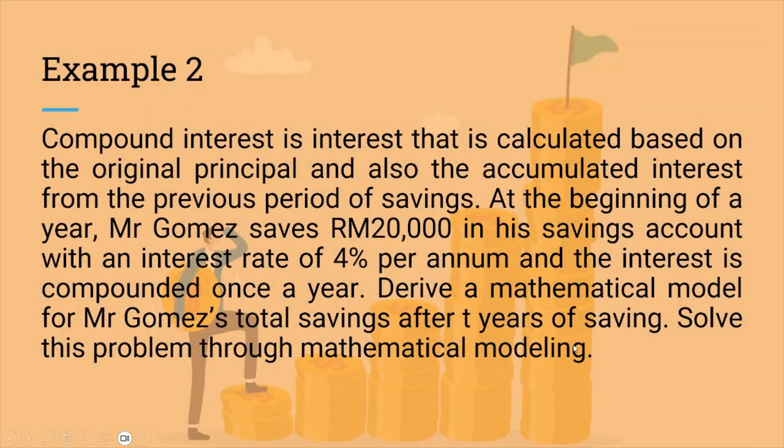Going forward, we have another example, example 2. Example 2 will be about bank interest. Compound interest is an interest that is calculated based on the original principal, which is the original money you save in your bank, and your savings increase with the allocated interest set by the bank. Accumulated interest from previous periods is added to the savings at the beginning of the year. We create a client named Mr. Gomez. He saves RM20,000 in his savings account with an interest rate of 4% per annum, and the interest is compounded once a year. We will derive a mathematical model for his total savings after three years.